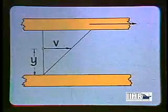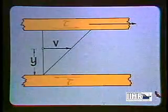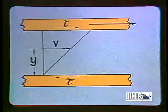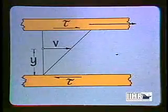Thus if one boundary is moved parallel to another, a viscous fluid contained between them will undergo a continuous shear or angular deformation as delineated by the velocity gradient. This is known as Couette flow.